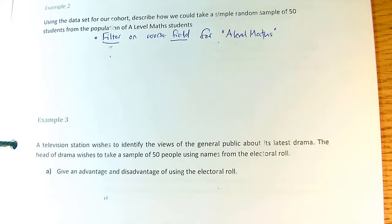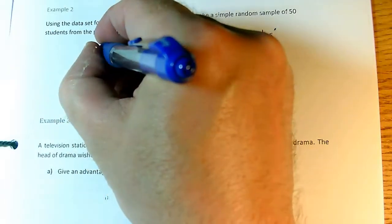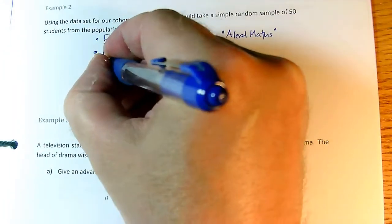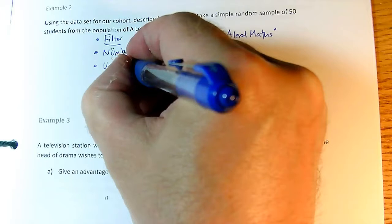Now we go into the standard set of bullet points for random sampling. So we have to number the population. Then we have to use random numbers, but we have to say how.